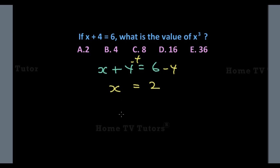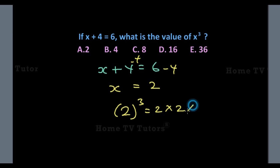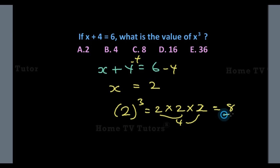The value of X raised to power 3, which is 2 raised to power 3, is 2 times 2 times 2. 2 times 2 is 4, and 4 times 2 gives us 8. The answer option C is the right answer.